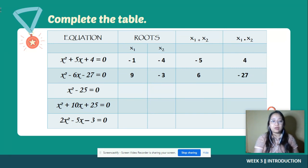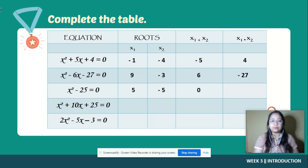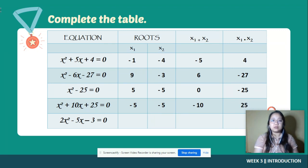Number three: x squared minus 25 is equal to zero. We can use extracting square root for this kind of equation — we transpose negative 25 to the right side and extract both sides, giving us positive five and negative five. Five plus negative five is zero, and five times negative five is negative 25. Number four: x squared plus ten x plus 25 equals zero. Using factoring we get negative five and negative five. Negative five plus negative five is negative ten, and negative five times negative five is positive 25.